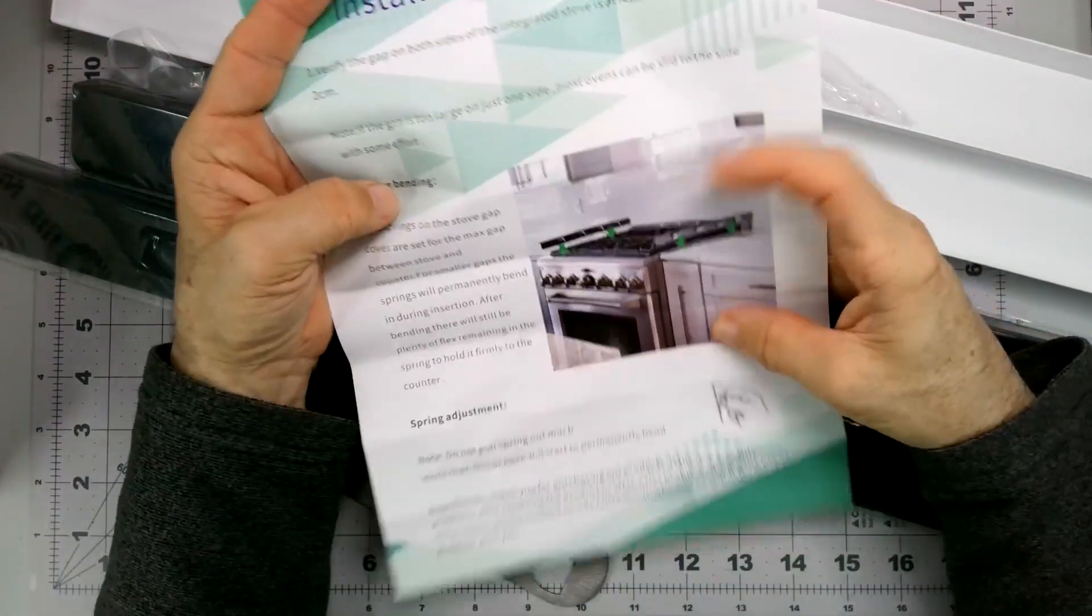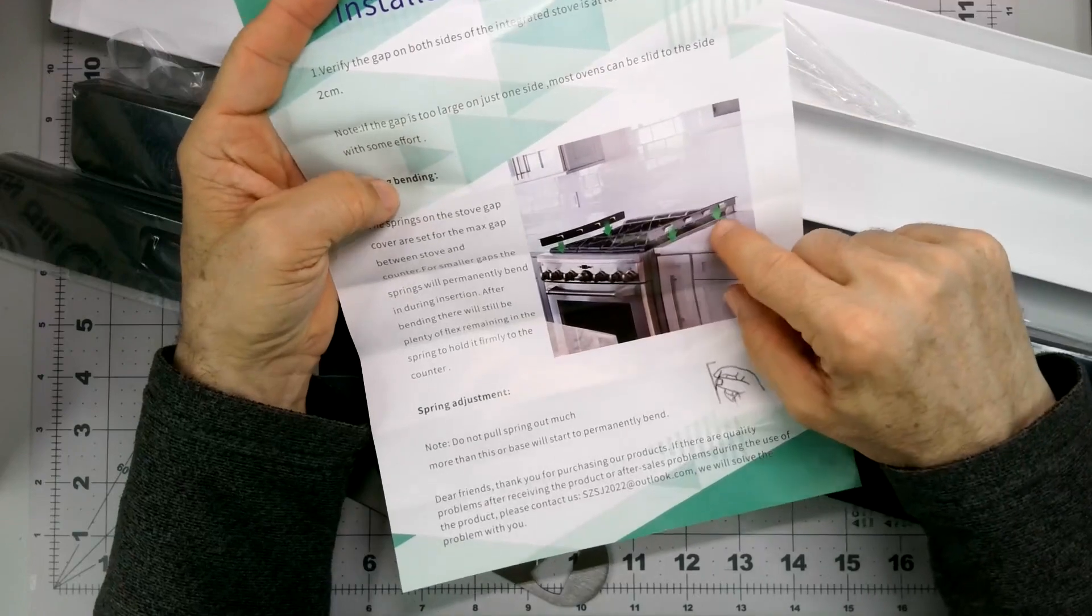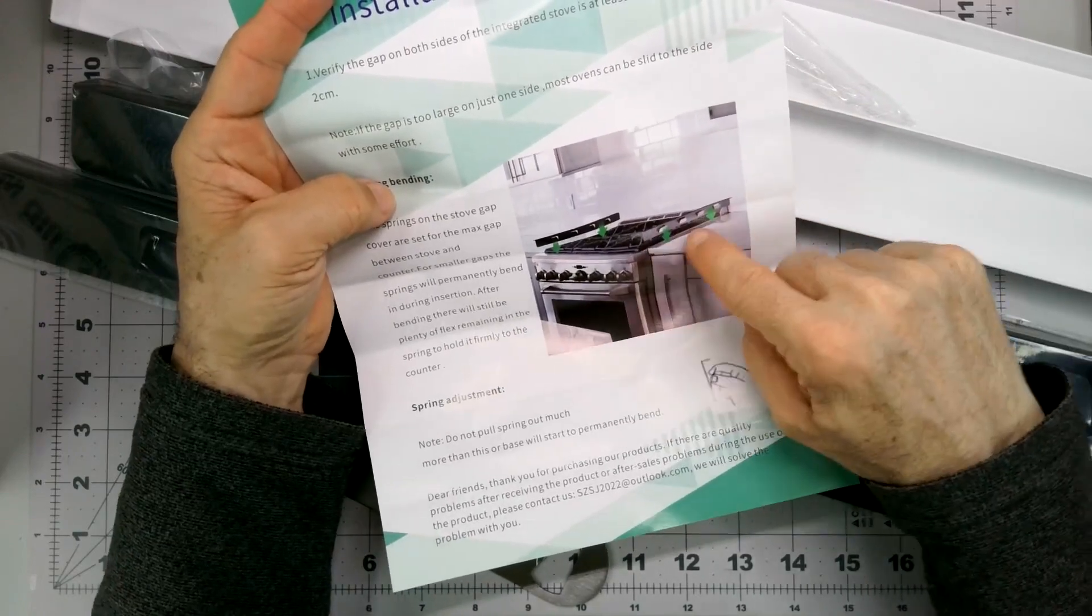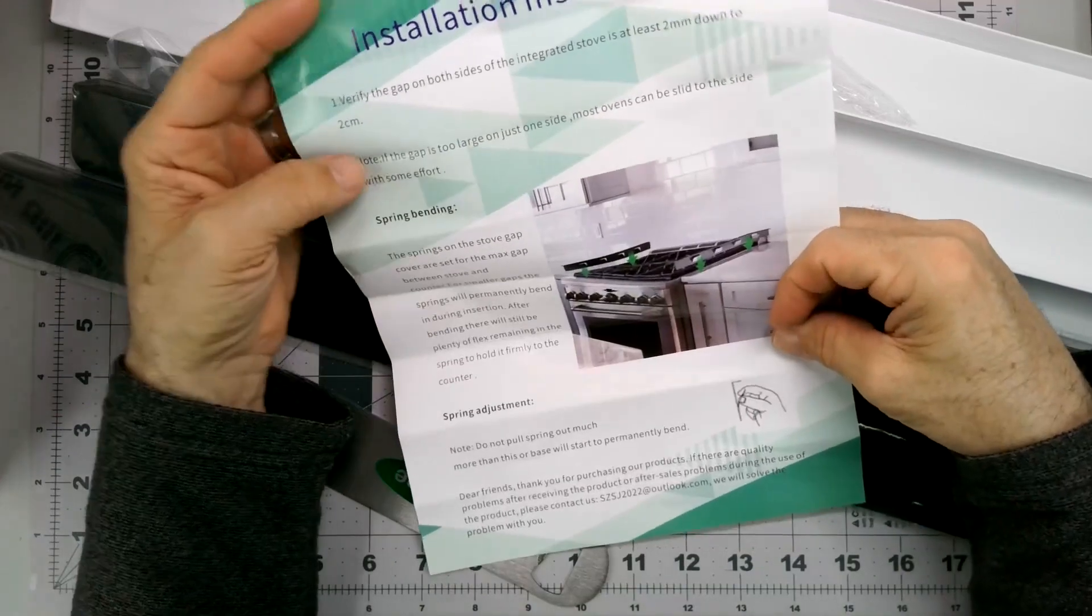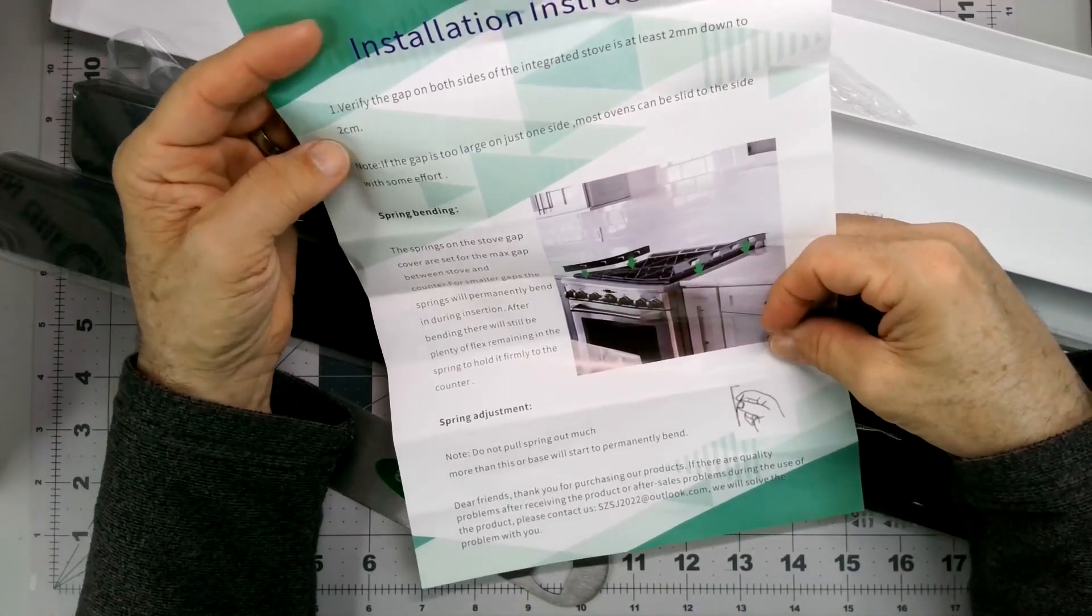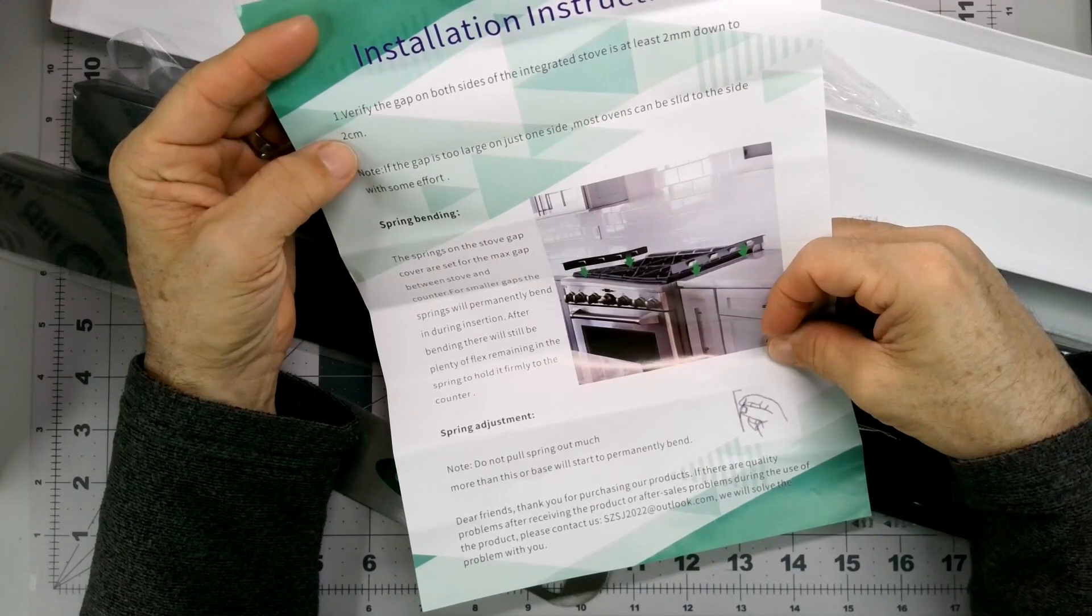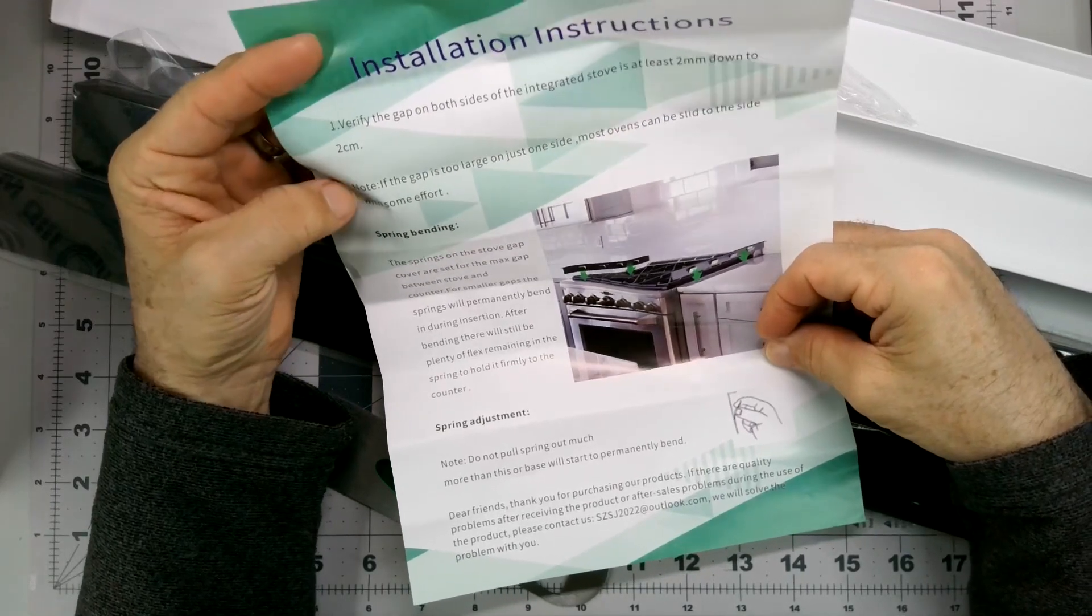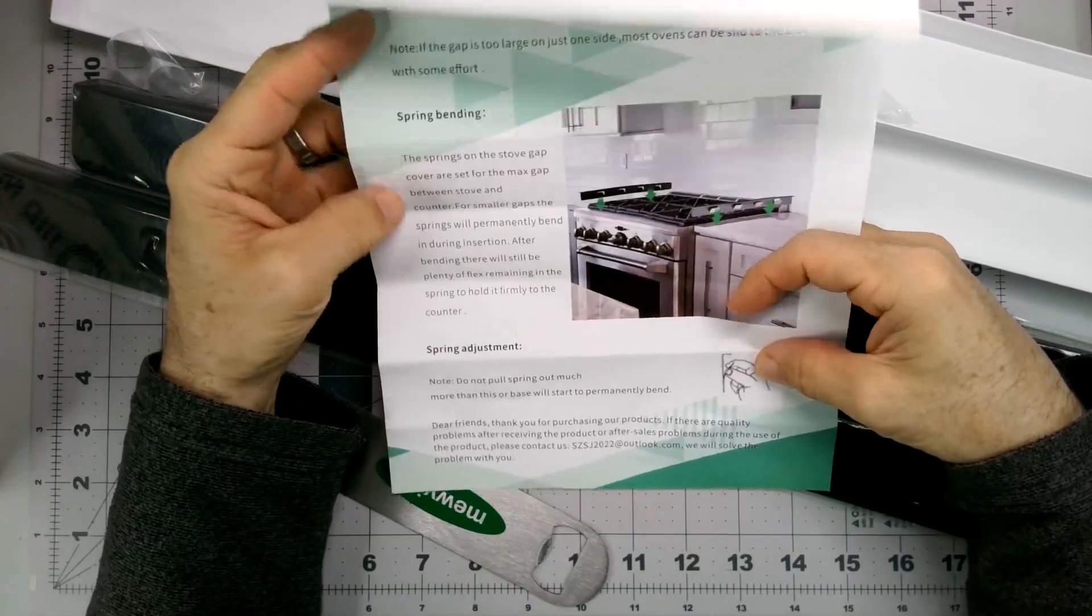So it is a pair, wasn't entirely sure. So to just squeeze in that little gap between the stove and the countertop, at least two millimeters down to two centimeters I would say. So try to center it. Do not pull the spring out too much.